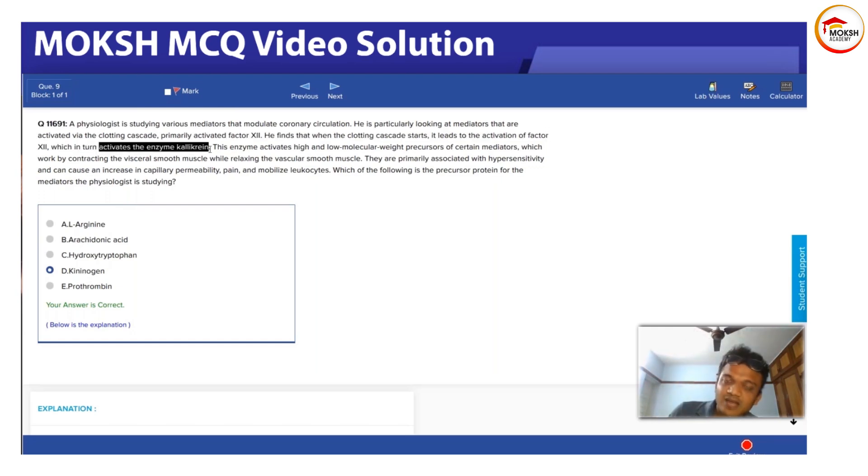This kallikrein enzyme activates high and low molecular weight precursors. Later we can see that they are asking what are these precursors. That's why always read the last line first - they will be asking about precursors at the end.